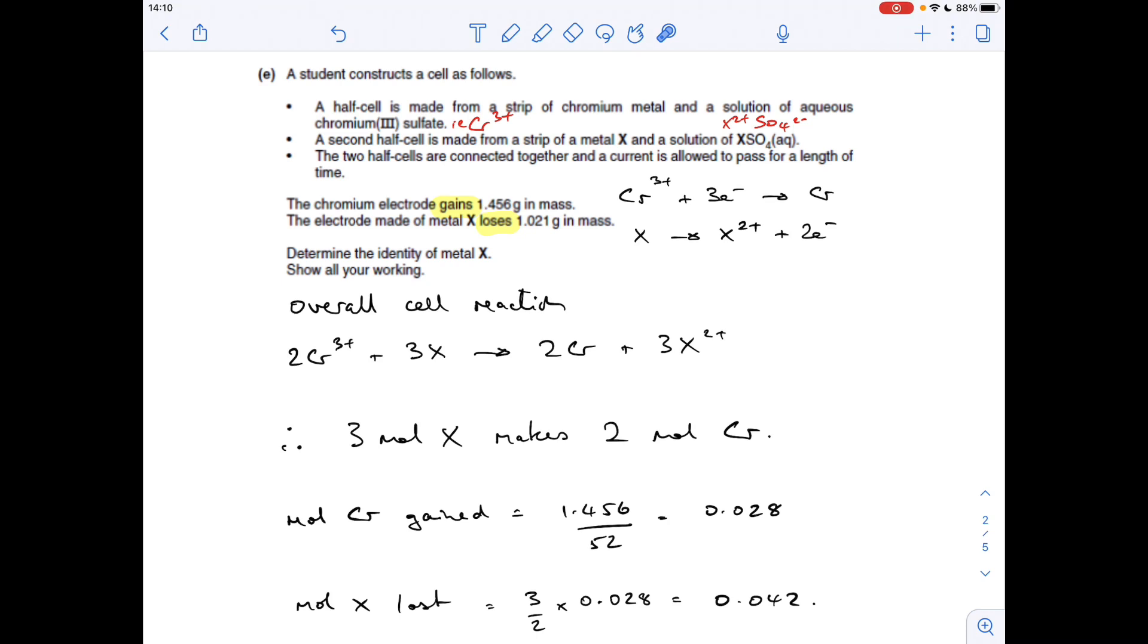The two half cells are connected together, current allowed to pass for a length of time. The chromium electrode gains that many grams in mass. So the chromium half cell must be moving in this direction because it's gaining mass, producing chromium. This is accepting electrons, and because it's Cr3+, it's going to gain 3 electrons. The electrode made from metal X loses that many grams in mass. That half equation is running in that direction. The metal is being lost, being dissolved and forming the ions.